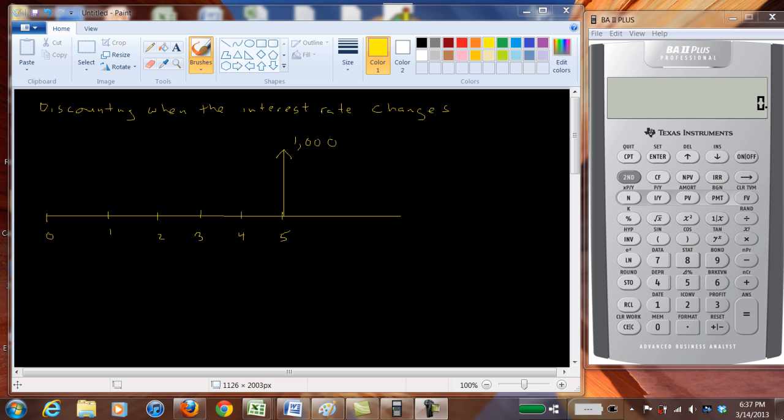Normally when we find the present value of something, we have one interest rate and the present value is defined to be equal to the future value in time period n divided by 1 plus r raised to the nth power.